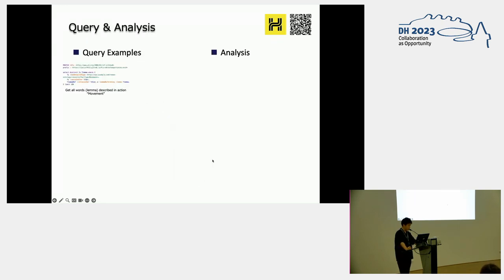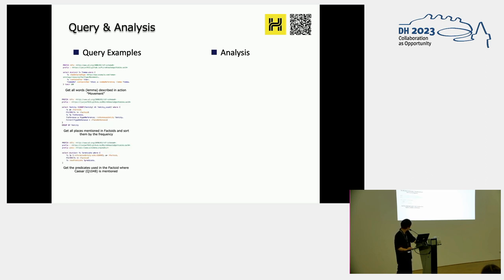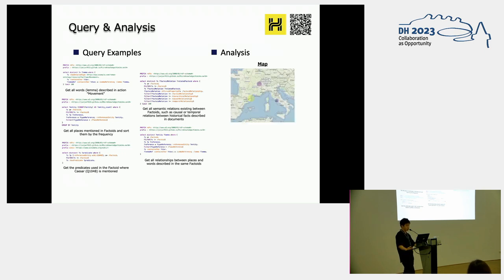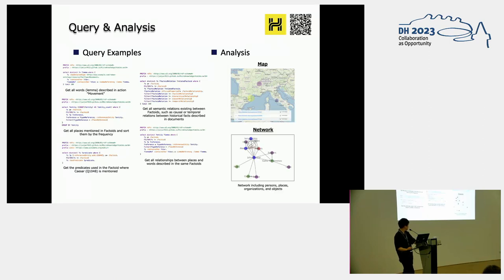This data can of course be searched by SPARQL, and as the data itself contains the semantics of the text descriptions, a query can be done on very detailed content and context information. For example, get all words described in action type movement, or get all places mentioned in the factoid, or get the predicate used in the factoid where Caesar is mentioned, or get all semantic relations existing between factoids, or get all relations between place and words described in the same factoid. And we can use those data to analyze historical phenomena, like map analysis or network analysis.